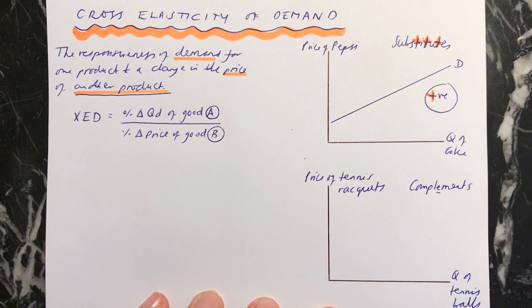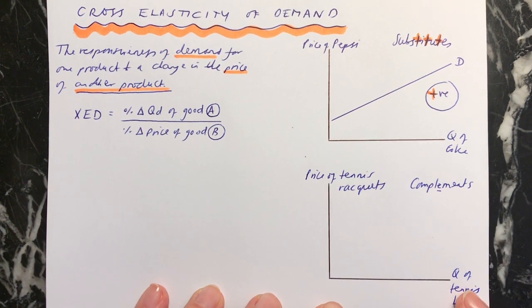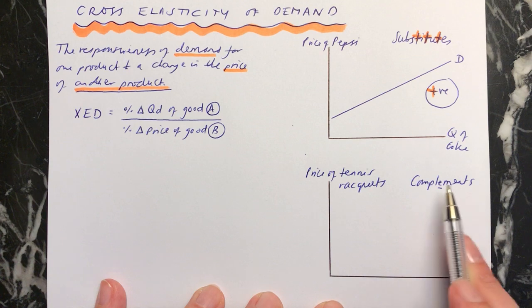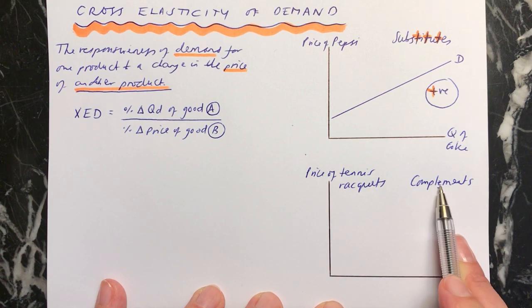Because you buy these two things together, we call them complements. And careful, that's an E in there, a complement. This isn't something that you give to me, I receive a compliment with an I. But these two things, you buy them together. It's a complement with an E in the middle.